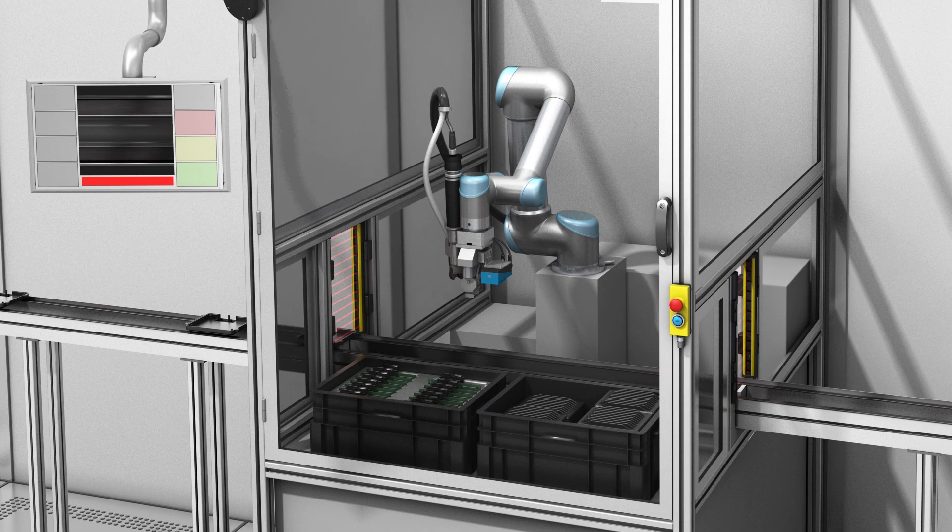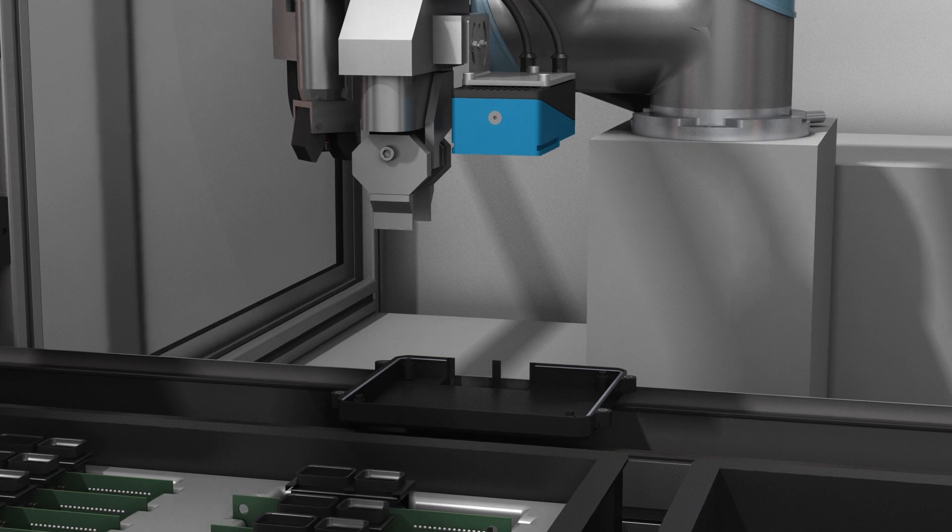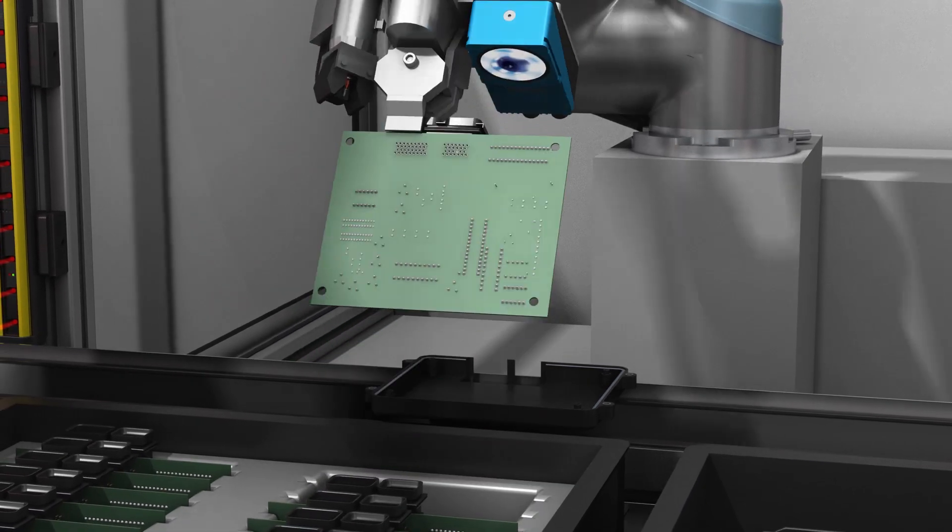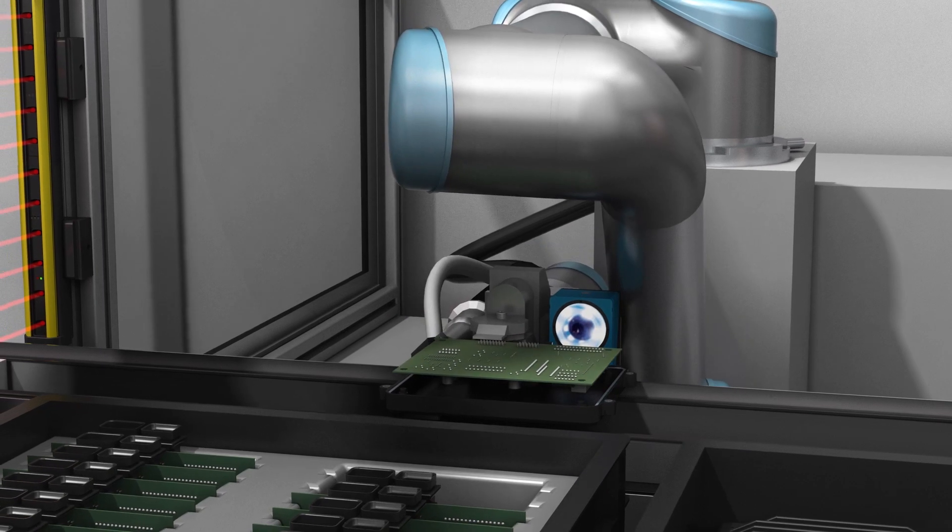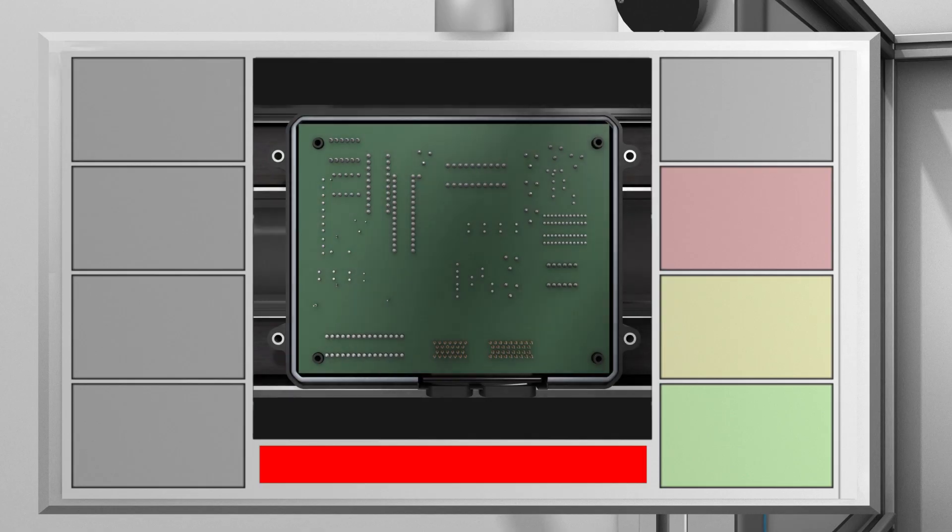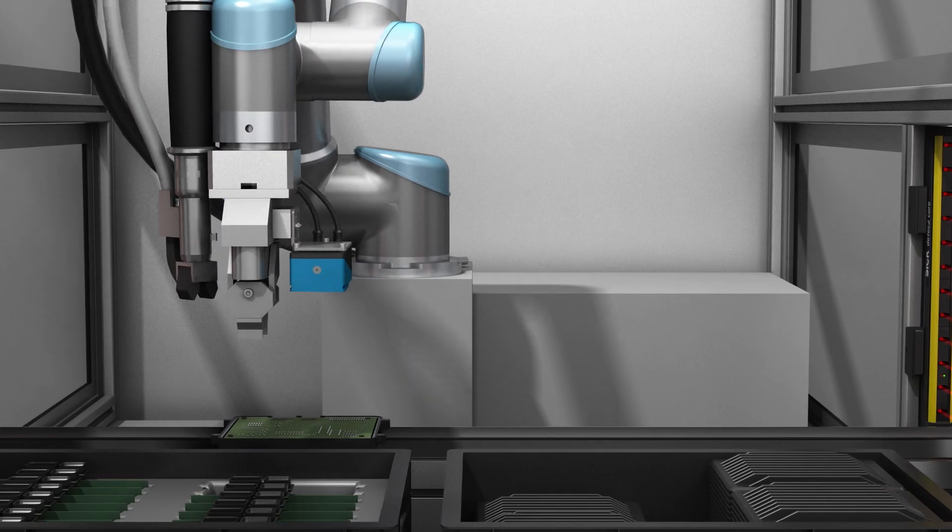Thanks to SICK's vision technology, robots are able to detect the positions of predefined objects and decide for themselves how to grip the part. This does away with the need for mechanical attachments such as object guides. Even measurements and quality inspections can be carried out. For example, optical monitoring systems can monitor the position and quality of products and harmonize the sequence during joining processes.